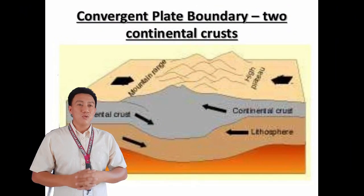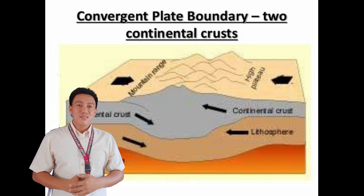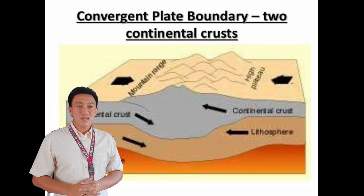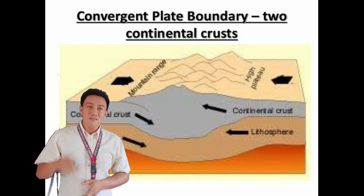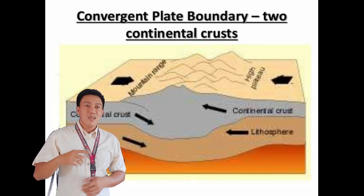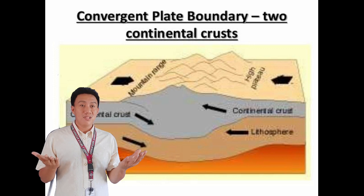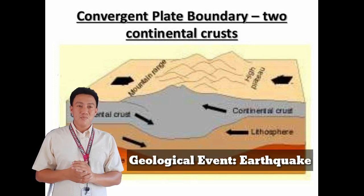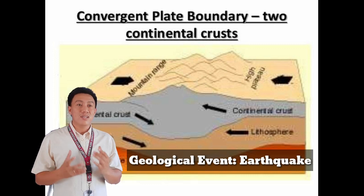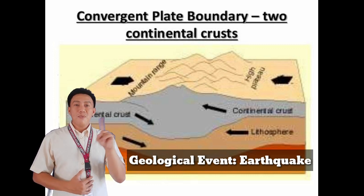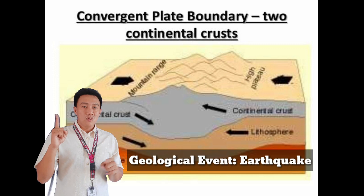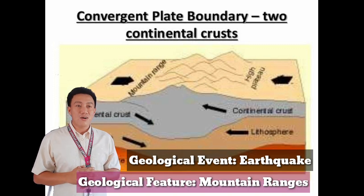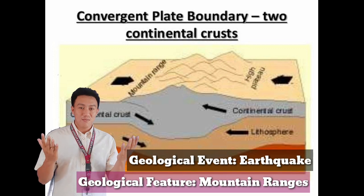In the converging of two continental plates, there is no subduction. Because there is no subduction, there is no volcanic activity, and there is no formation of a volcanic arc. The geological event of this process is earthquake only — no possible tsunami, no possible eruption. The only geological feature of this process is mountain formation.